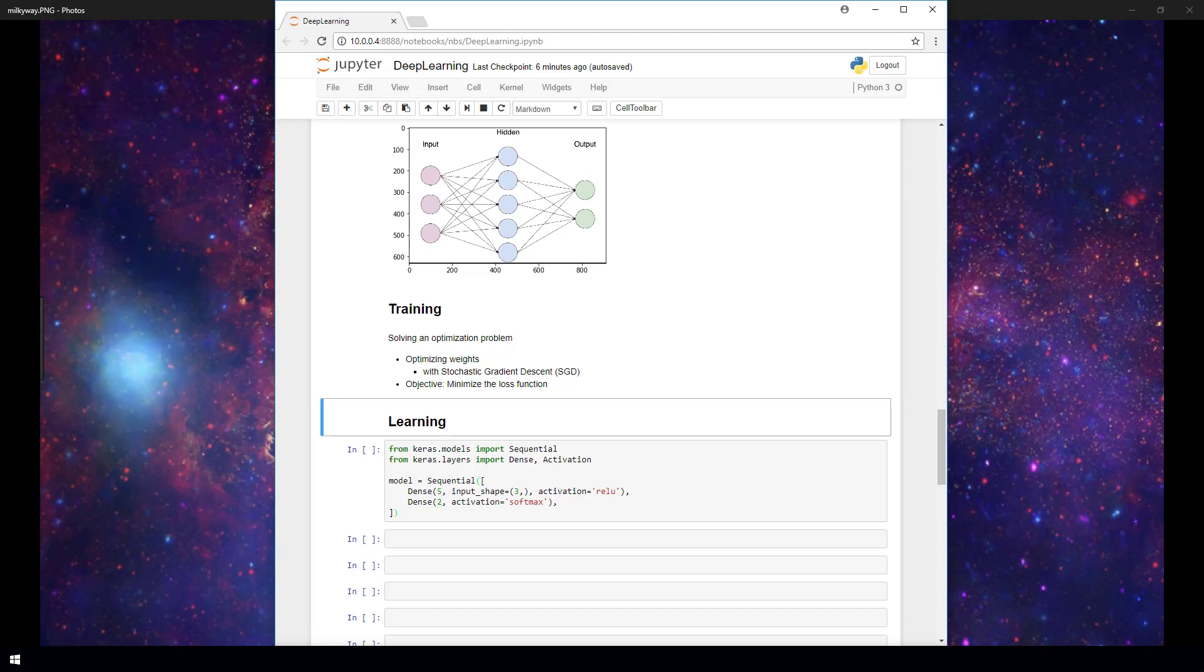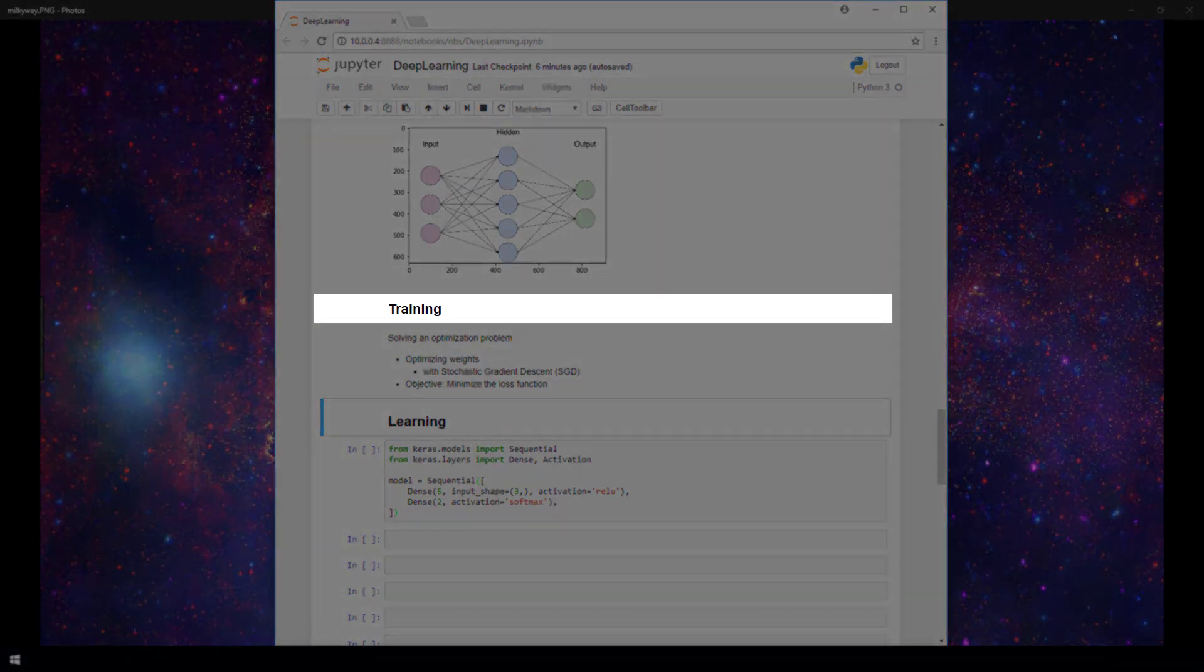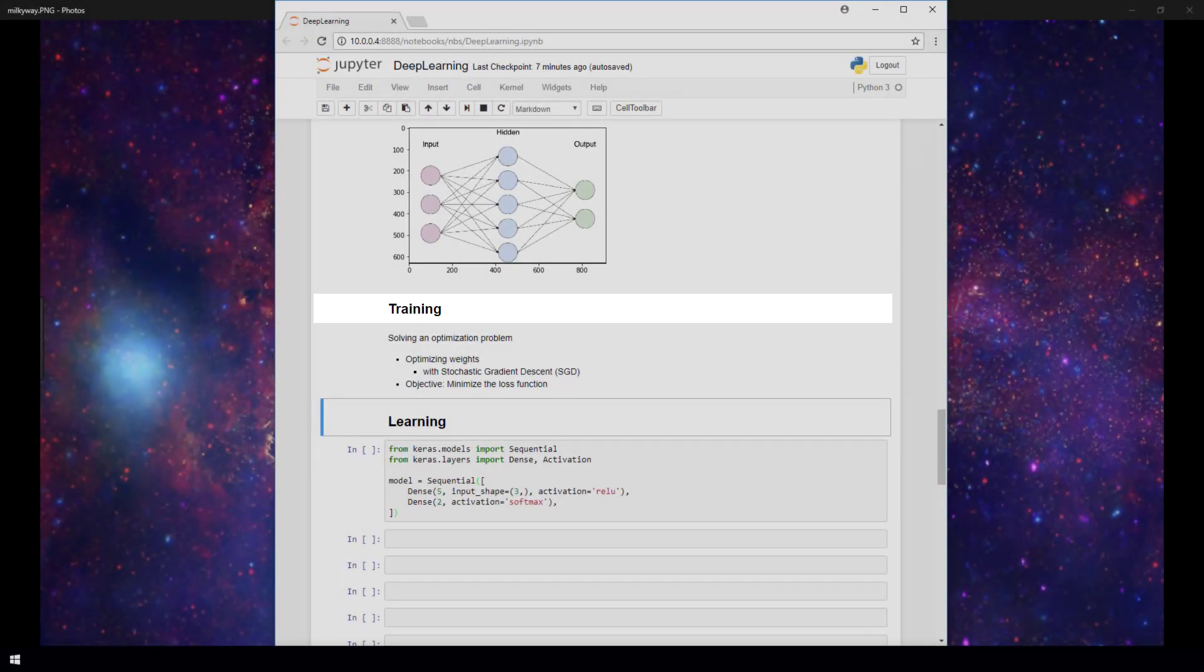In this video, we'll discuss what it means to train an artificial neural network. In previous videos, we went over the basic architecture of a general artificial neural network, and now, after configuring the architecture of the model, the next step would be to train this network.